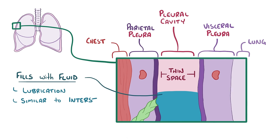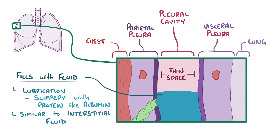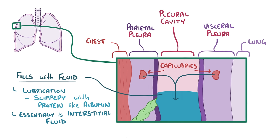This pleural fluid is similar to interstitial fluid, and is made slippery by proteins like albumin. It essentially is interstitial fluid — there's always a tiny bit of plasma that leaks out of capillaries and gets into the interstitial space. Since these capillaries are so close to the edge of the pleural space, that fluid makes its way into that space and collects there. Fortunately, there are lymphatic vessels in the pleura that drain the fluid away and deliver it back into the circulatory system.